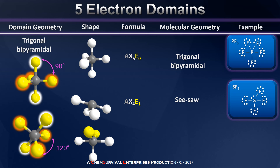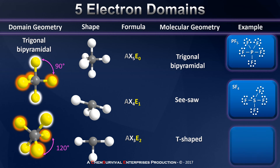Let's carry that forward one more step. Imagine a compound with an AX3E2 formula. I have to remember to place my lone pair electrons into equatorial positions because there they'll be as far apart as possible from as many domains as possible. Removing the appearance but not the influence of those lone pair electrons gives me a structure that looks like the letter T — hence we call this a T-shaped molecular geometry. An example is the interhalogen compound chlorine trifluoride, in which the central chlorine has three bonding domains and two lone pairs, causing it to adopt this T-shape.